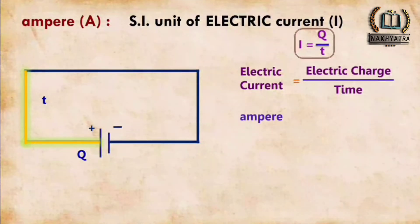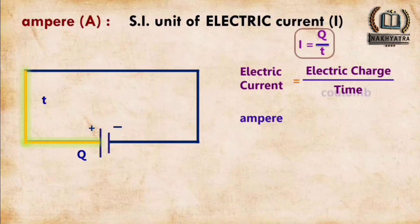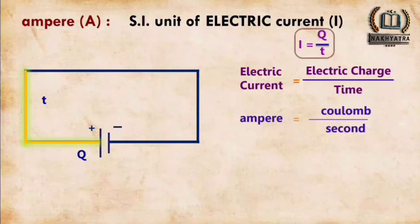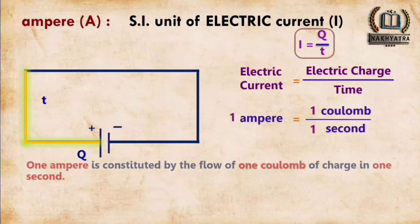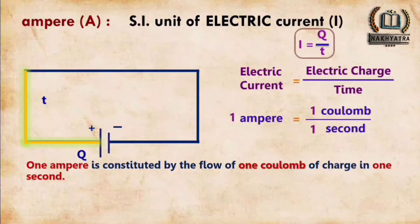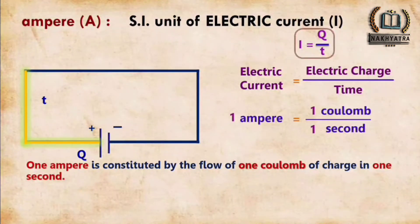Putting in the SI units — electric current in ampere, electric charge in Coulombs, and time t in seconds — we get: 1 ampere = 1 Coulomb per second. The definition of one ampere: it is constituted by the flow of one Coulomb of charge in one second.